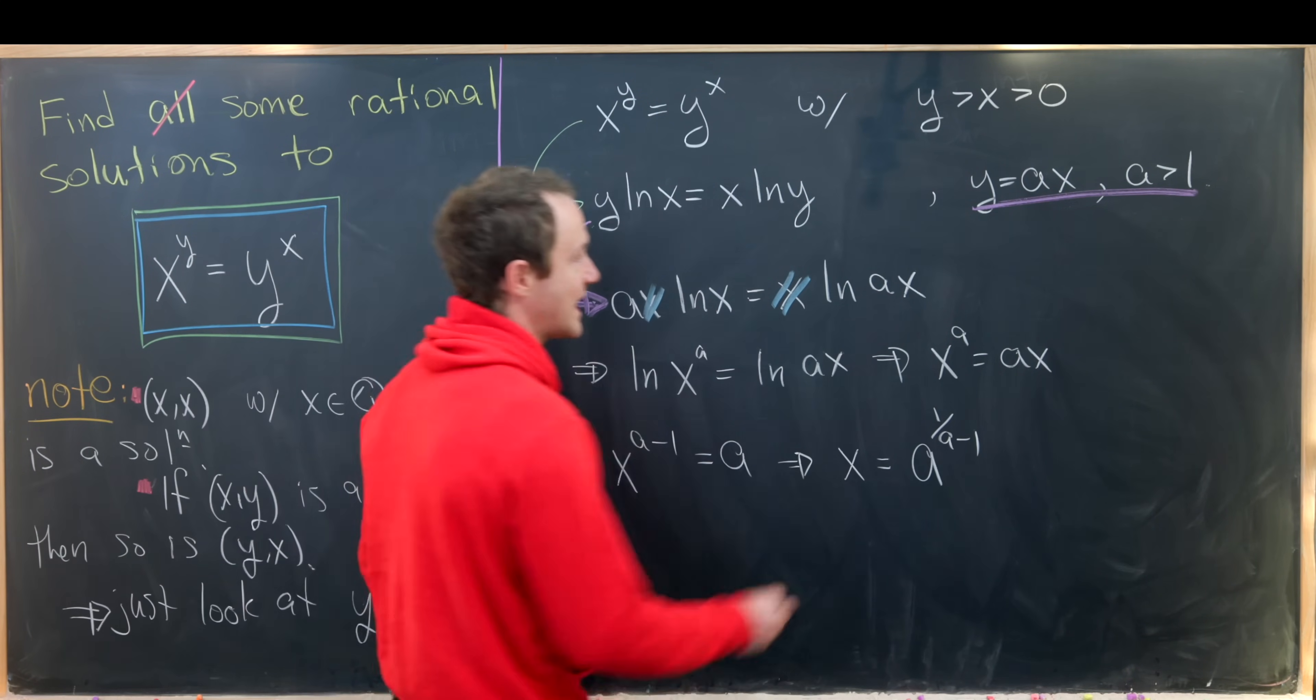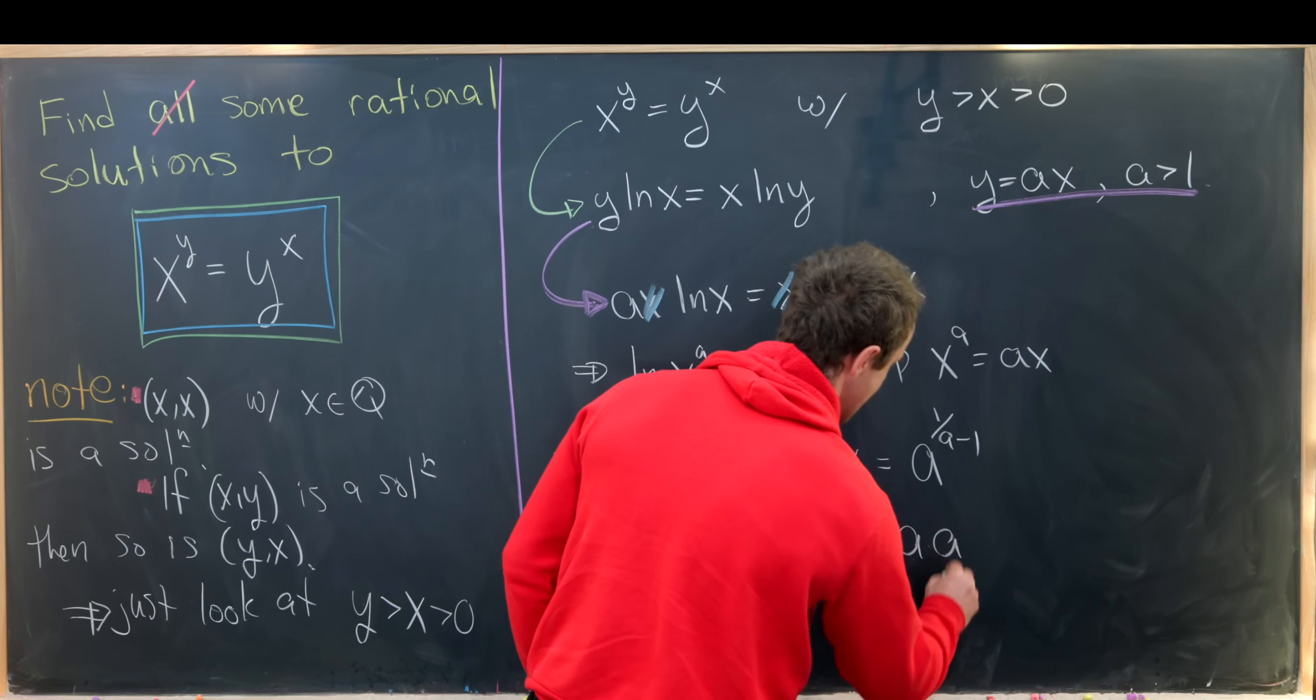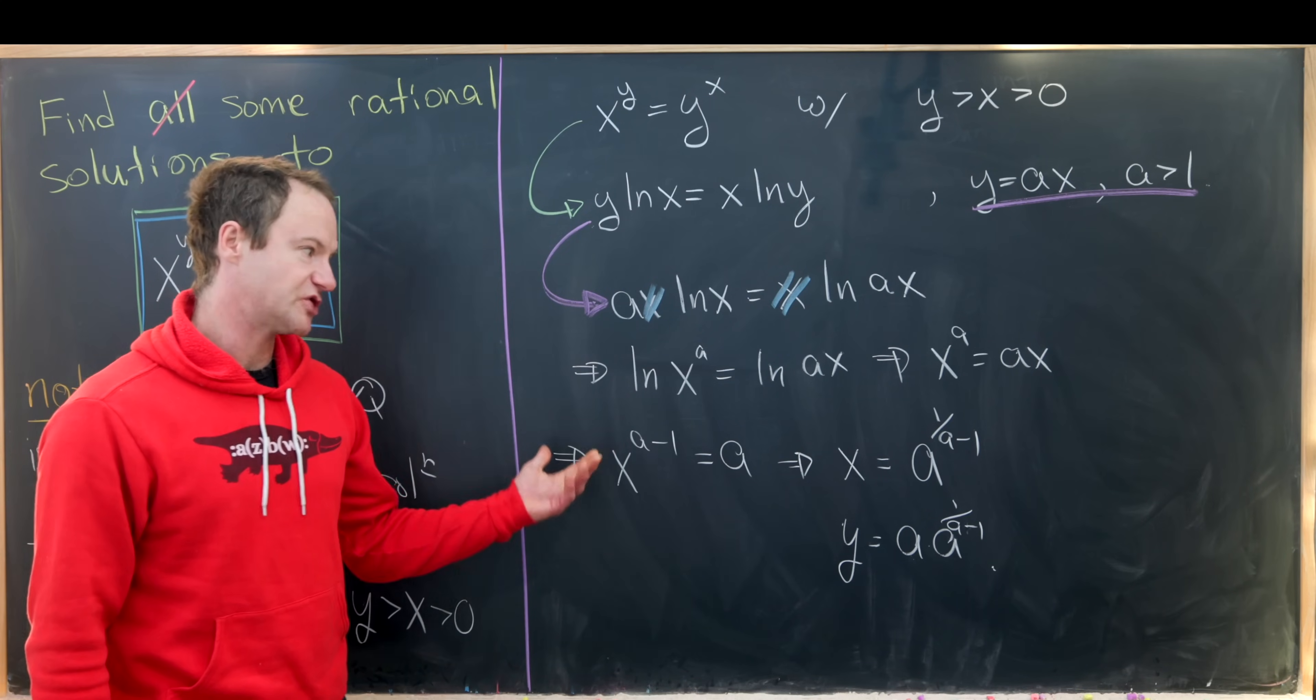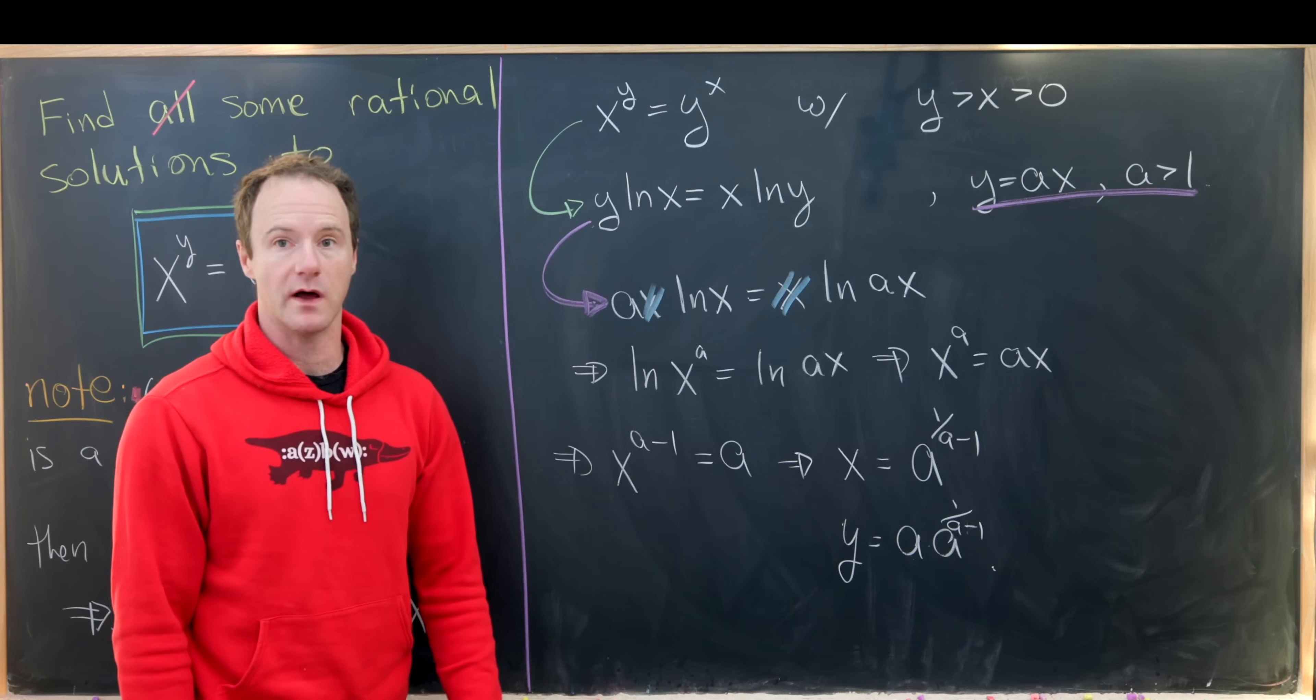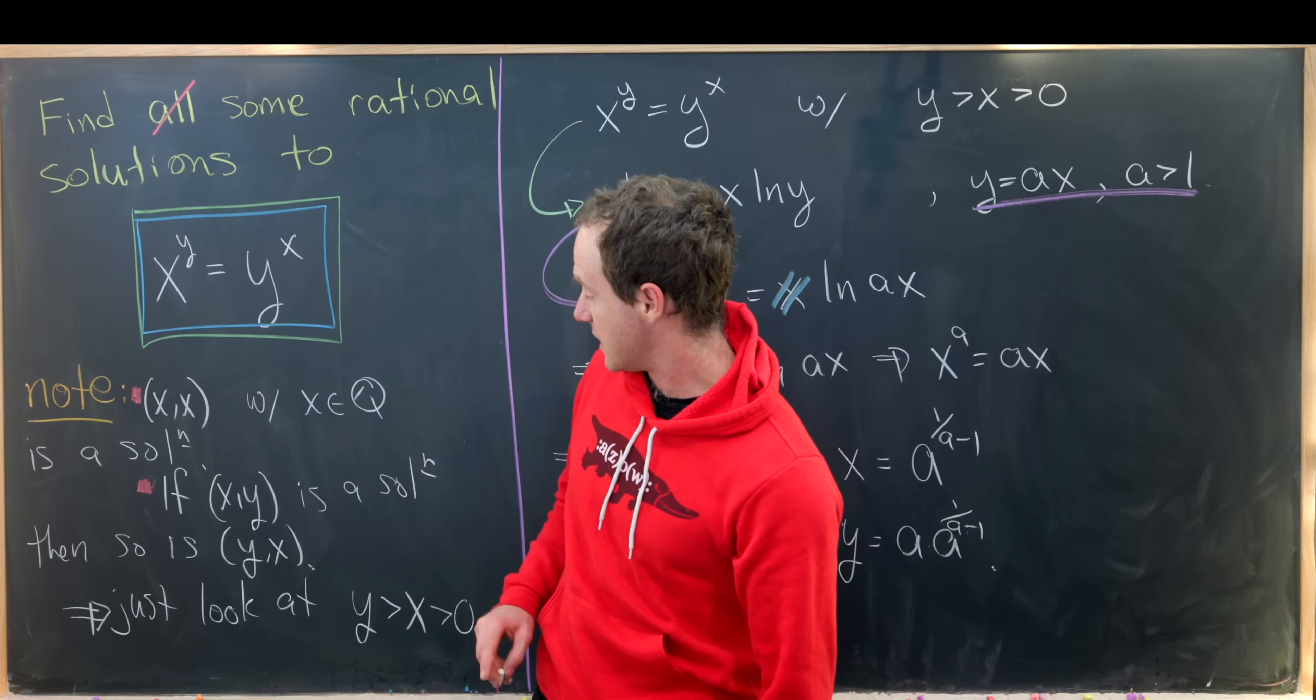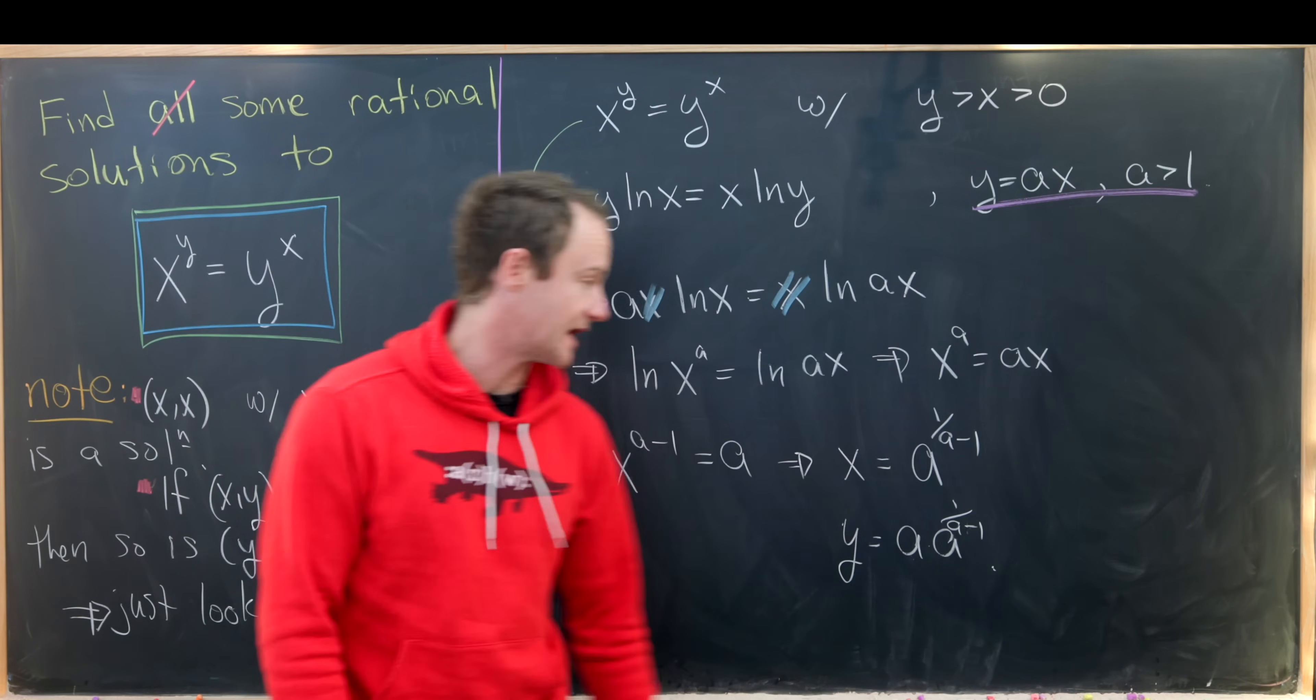And then furthermore, we have y is equal to a times that. So we have y is equal to a times a to the one over a minus one. So there we've got a parametrized solution, which actually works for all values of a which are bigger than one. And then furthermore, if a is equal to one, we get this solution again, which was given right here. And if a is less than one, then we just switch the values of x and y.